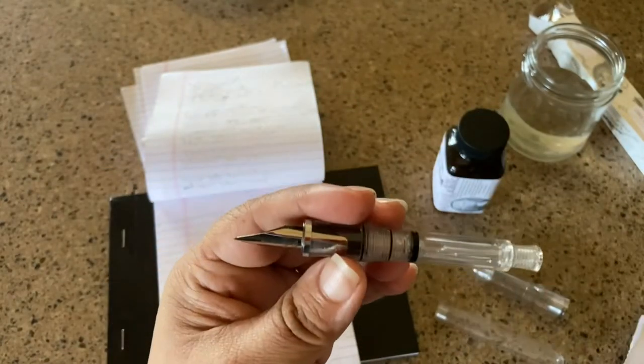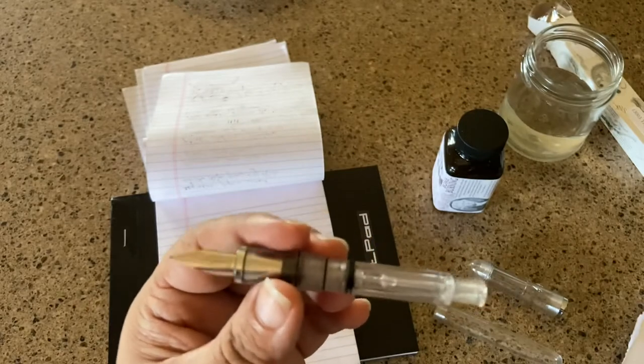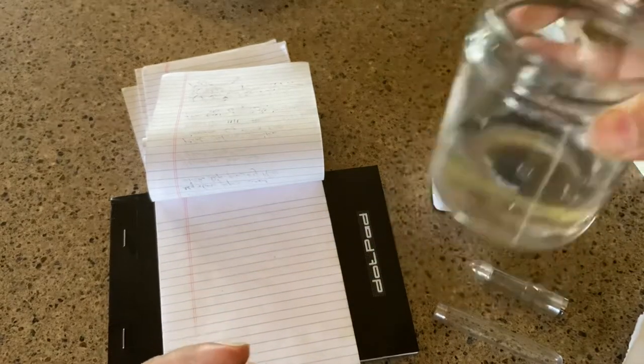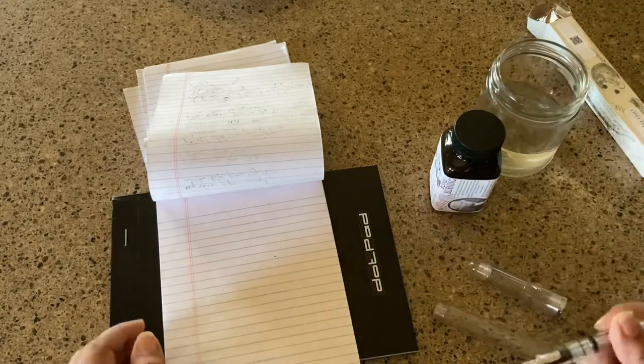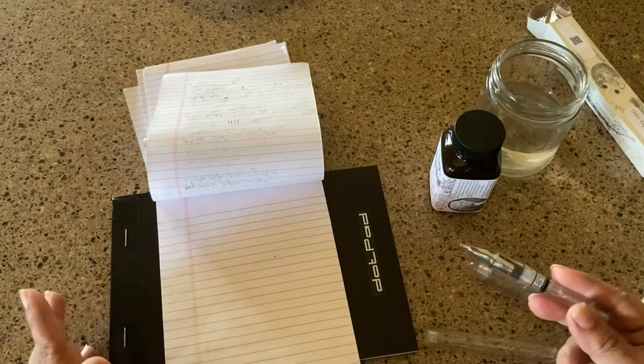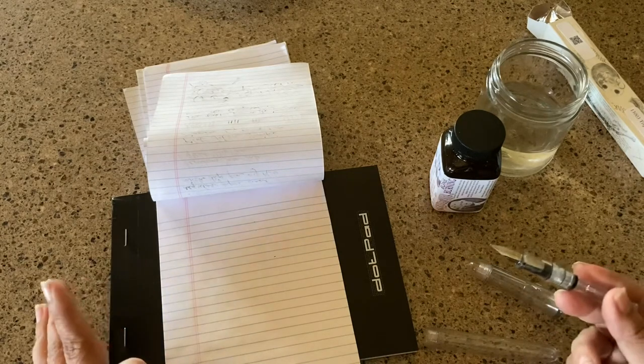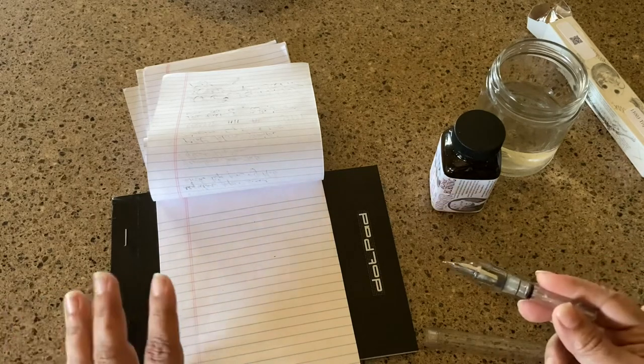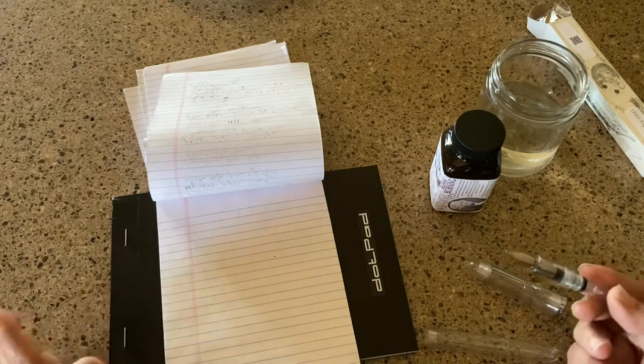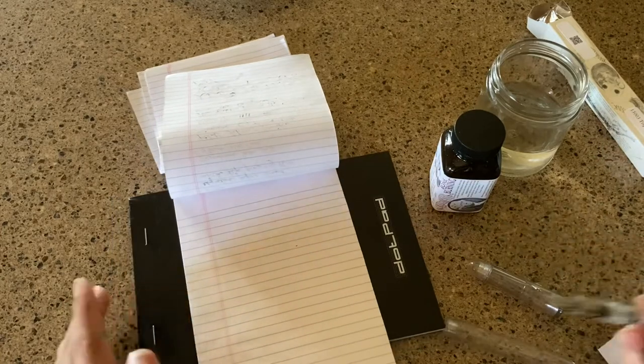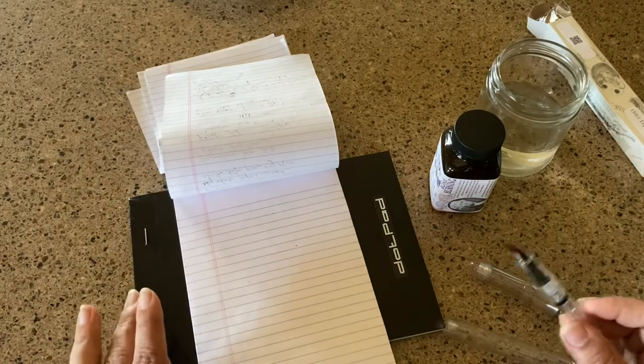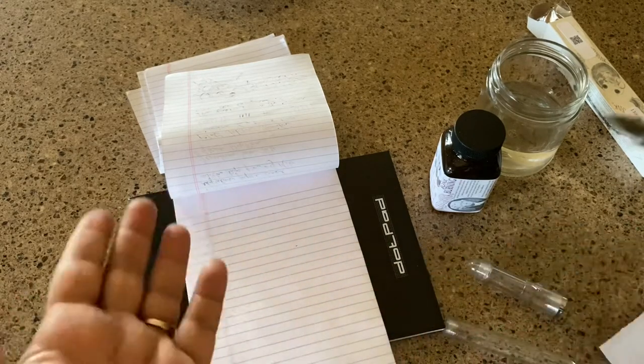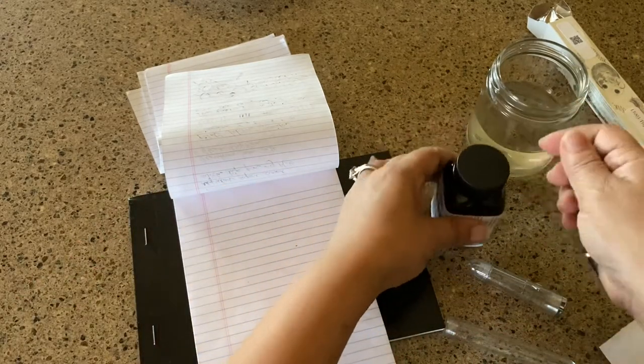I rinsed this off really well in a solution of water in my little jar and about a drop and a half of Dawn Liquid Detergent. Let it soak there for over an hour, and then rinsed it out really well with filtered, distilled water. We have really hard water where we live, so I don't want any stuff getting into my pen. But it'll be fine if you use just regular tap water, which a lot of people do.